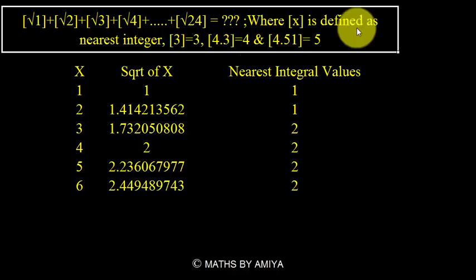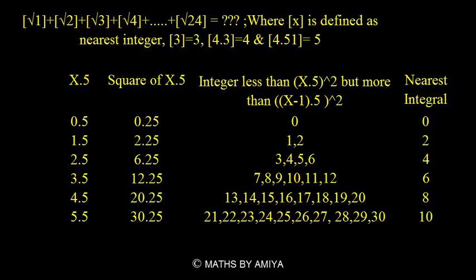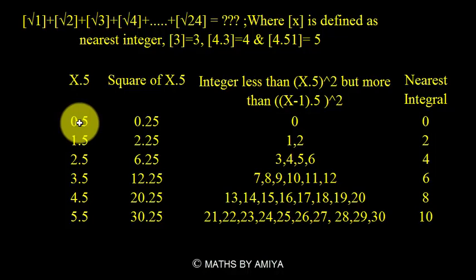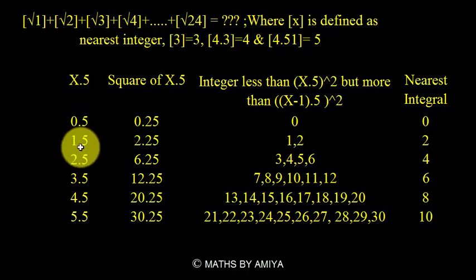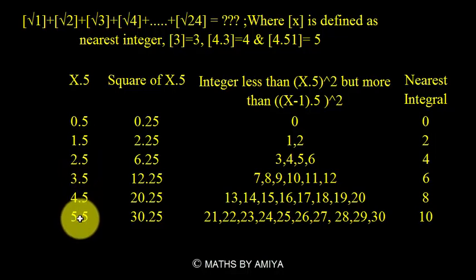Again, for the 0.5 condition, I have created a chart. Let's analyze the chart and get one basic series. Since 0.5 is the deciding factor, we work on values 0.5, 1.5, 2.5, 3.5, 4.5, 5.5, and so on.